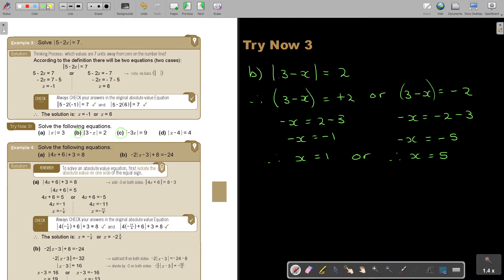Let's look at number C. |-3X| = 9. I have my two options. Therefore, -3X = +9, or -3X = -9.